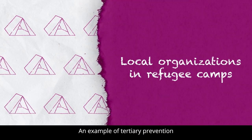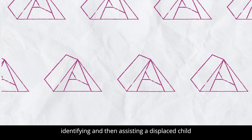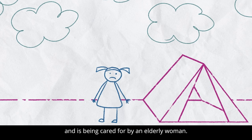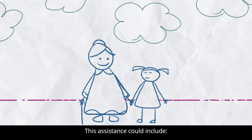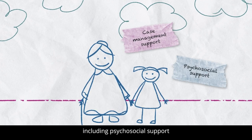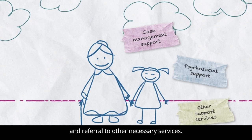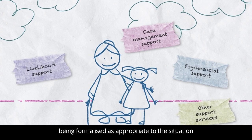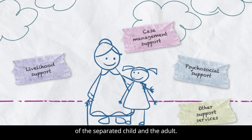An example of tertiary prevention would be local organisations in a refugee camp identifying and then assisting a displaced child who is separated from family and is being cared for by an elderly woman. This assistance could include the child receiving case management support, including psychosocial support and referral to other necessary services, the adult receiving livelihood support, and the care arrangement being formalised as appropriate to the situation of the separated child and the adult.